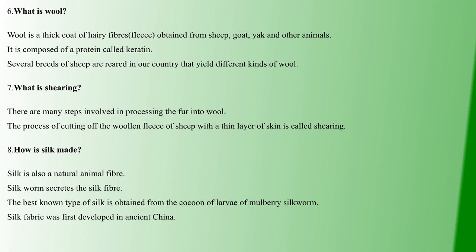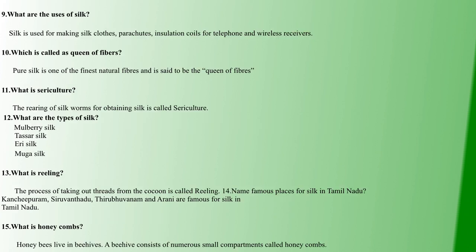Eighth question: how is silk made? Silk is a natural animal fiber. The silkworm is an insect that secretes silk. The best type of silk comes from the cocoon of the larvae of the mulberry silkworm. The cocoon of the mulberry silkworm larvae is the best known silk, and it is very expensive.